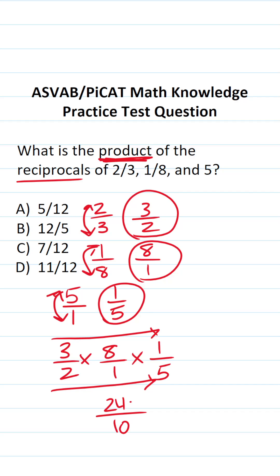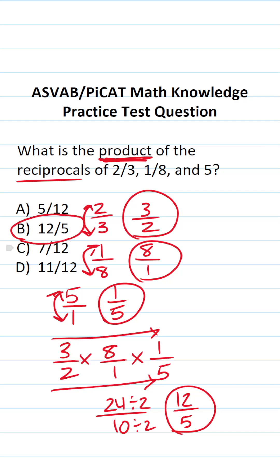Now we can reduce this by a common factor of two. Twenty-four divided by two is twelve, and ten divided by two is five. So the product of the reciprocals of two-thirds, one-eighth, and five is twelve over five. The answer to this one is B.